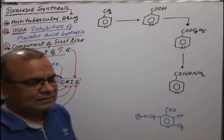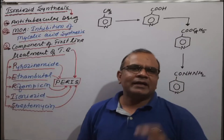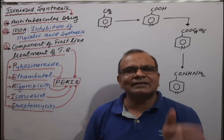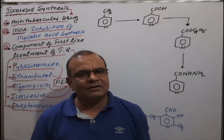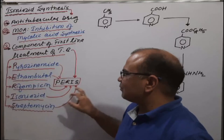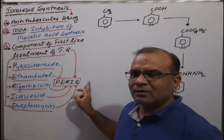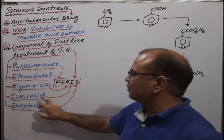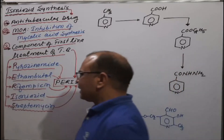To identify whether a drug is a first-line drug for tuberculosis treatment, you can use the PERIS mnemonic: P for pyrazinamide, E for ethambutol, R for rifampicin, I for isoniazid, and S for streptomycin.